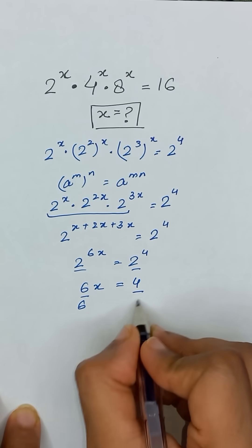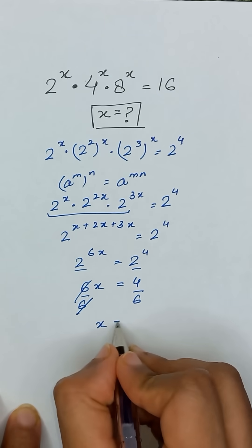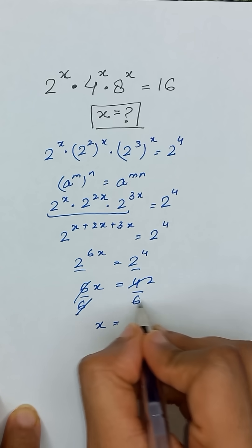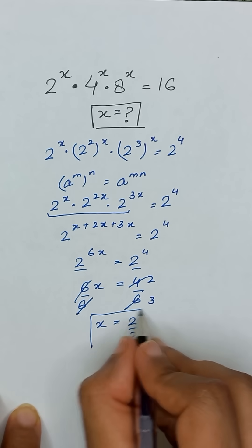Now dividing both sides by 6 to isolate x. This gives us 4 divided by 6, which simplifies to 2 divided by 3. The value of x is equal to 2 divided by 3.